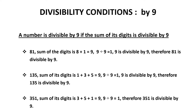The number 351 has the same digits as 135. The sum of its digits is also 9, so the number 351 is divisible by 9. What about the numbers 513 and 531? Both numbers have the same digits and their sum is equal to 9, so both these numbers are divisible by 9.